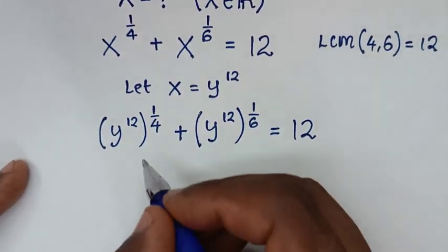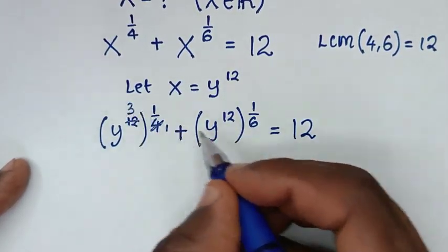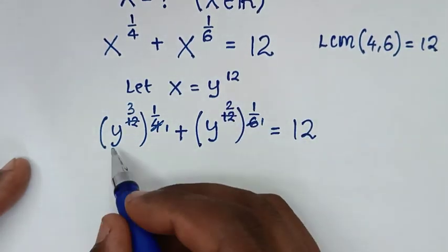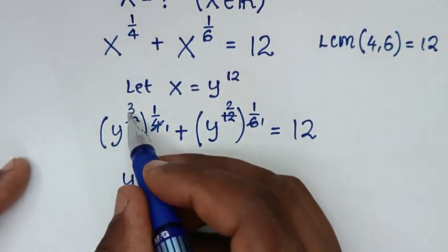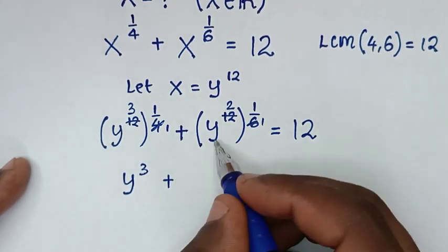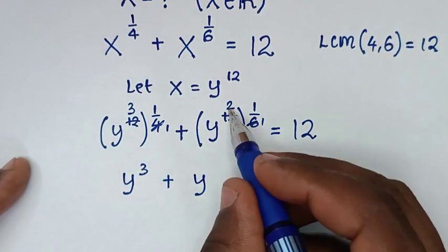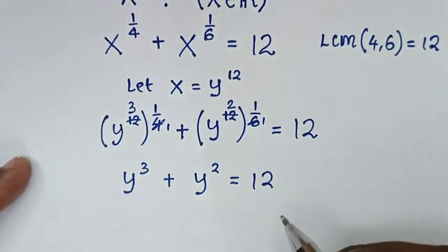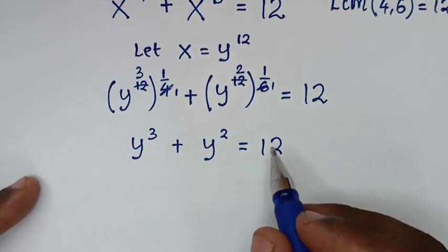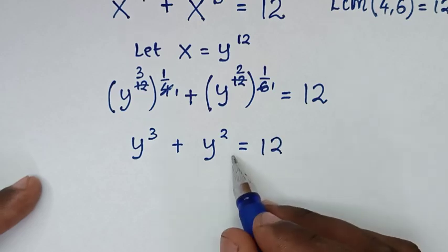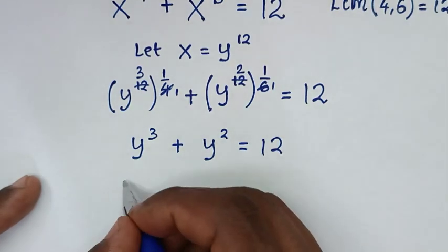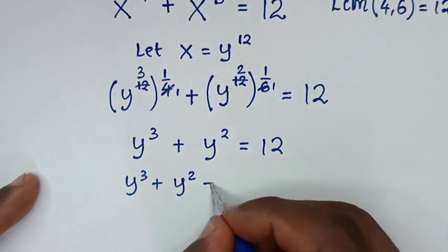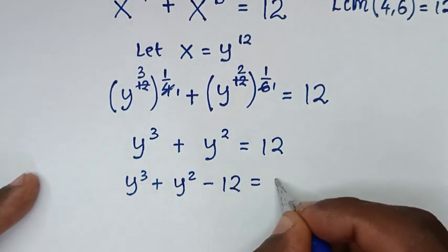In the next step, to simplify: 12 times 1 over 4 gives y to the power of 3, plus 12 times 1 over 6 gives y to the power of 2, is equal to 12. Then taking 12 to the left side, it becomes y to the power of 3 plus y to the power of 2 minus 12 equals 0.